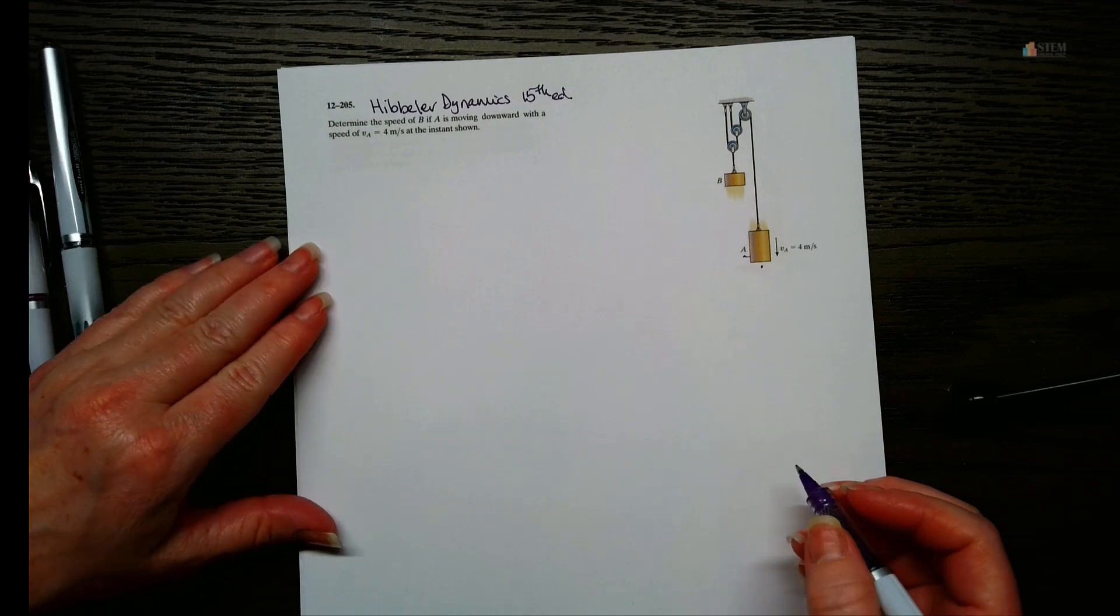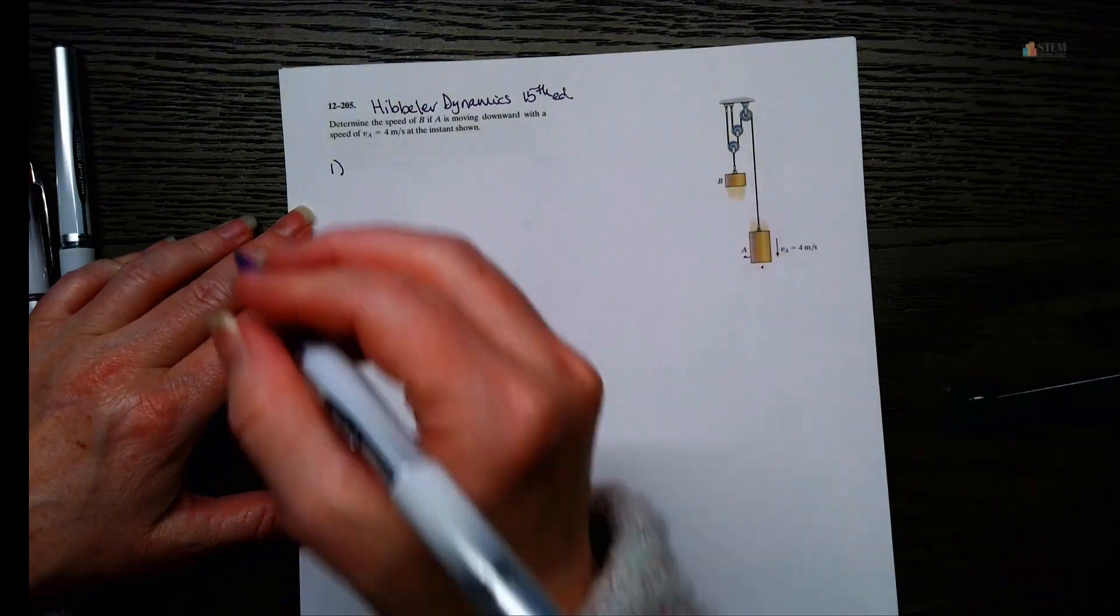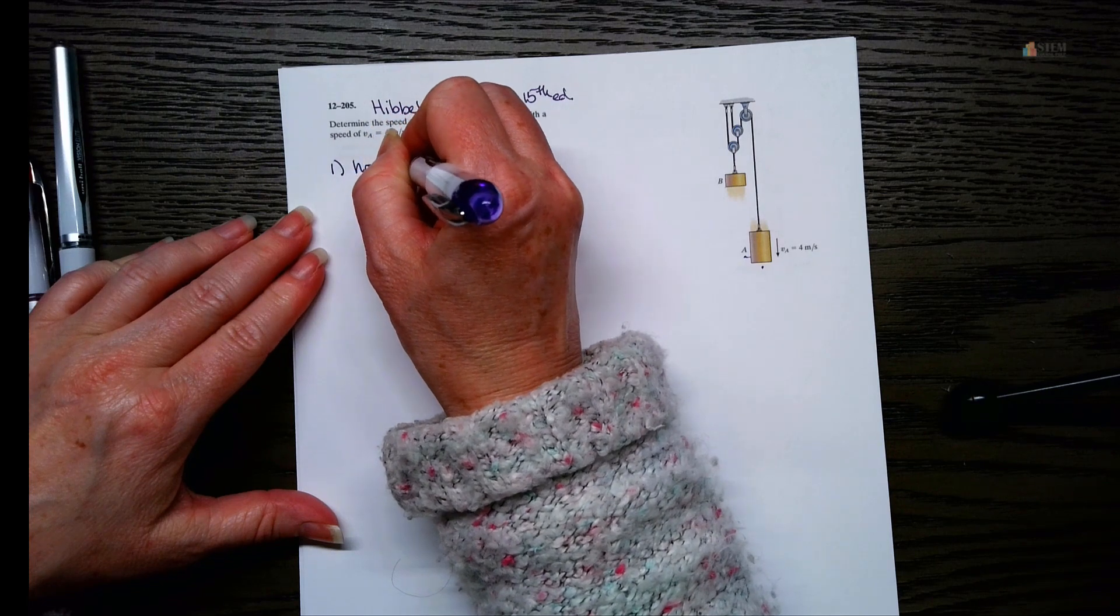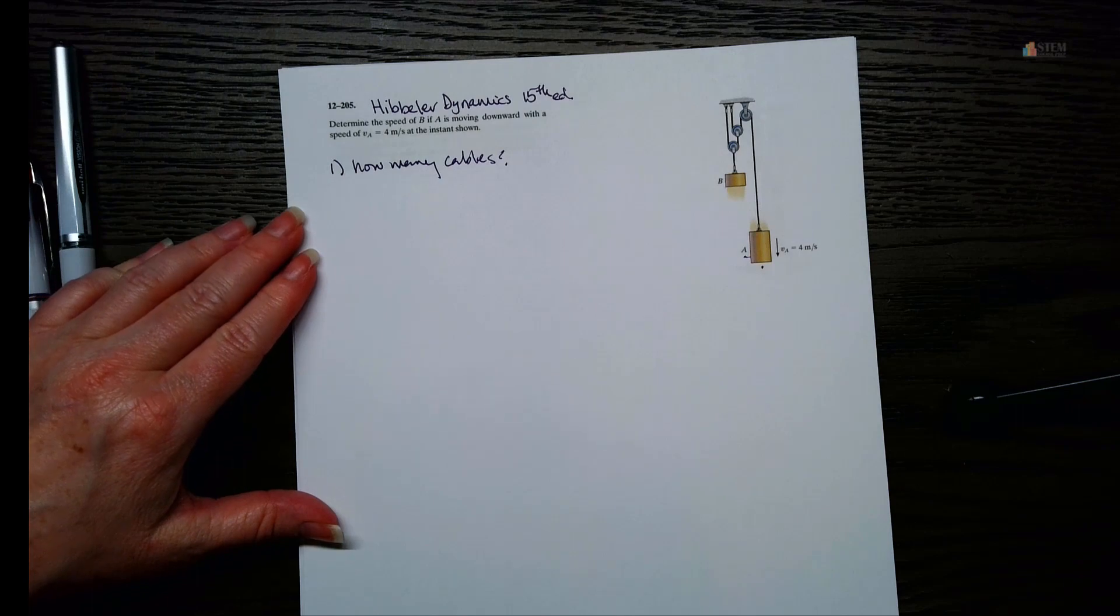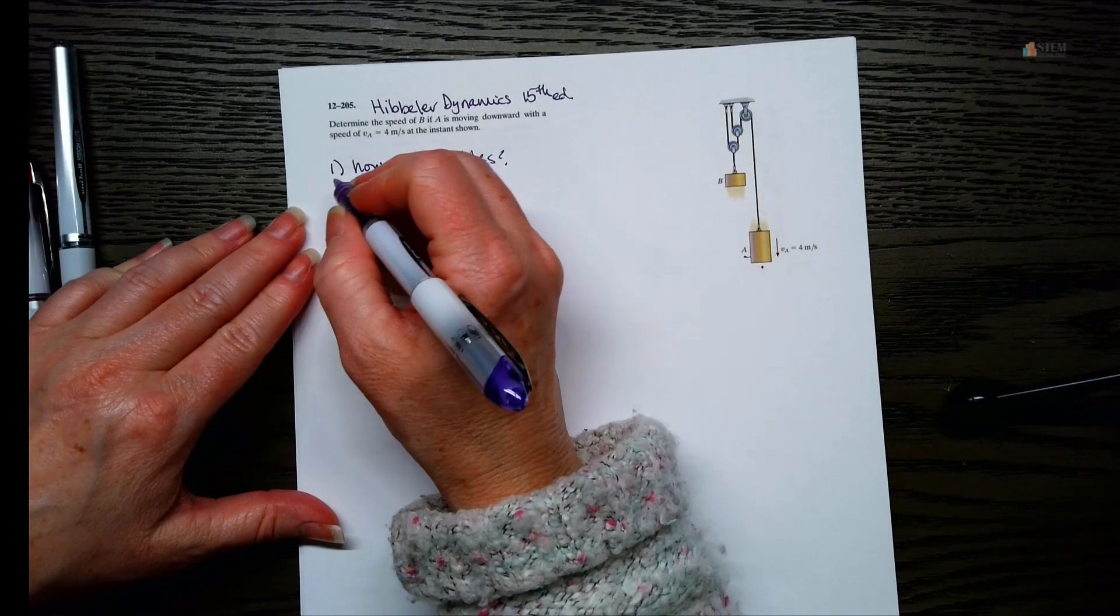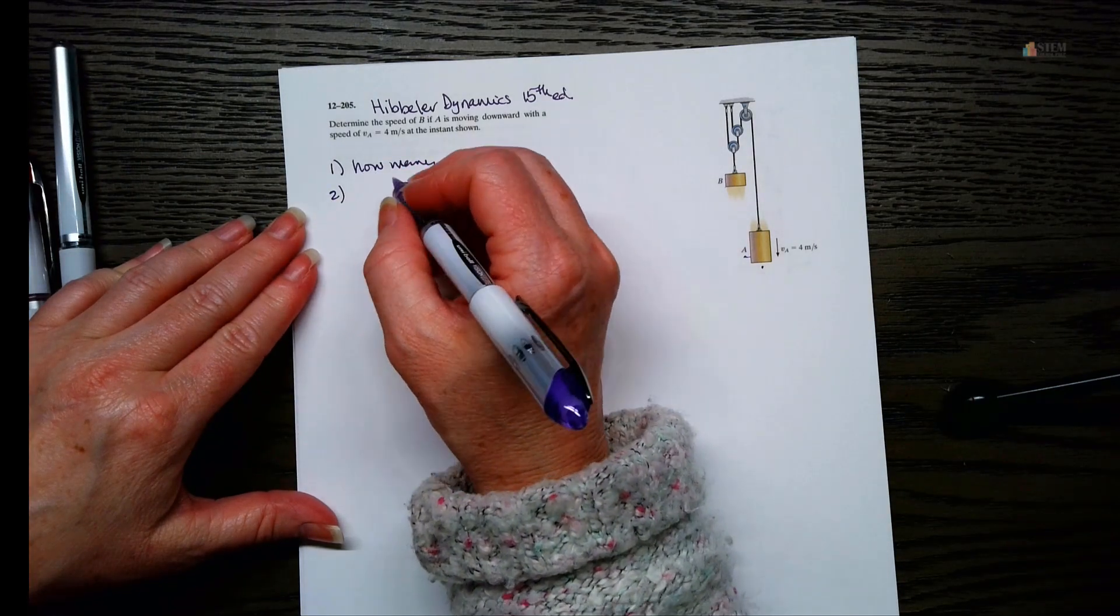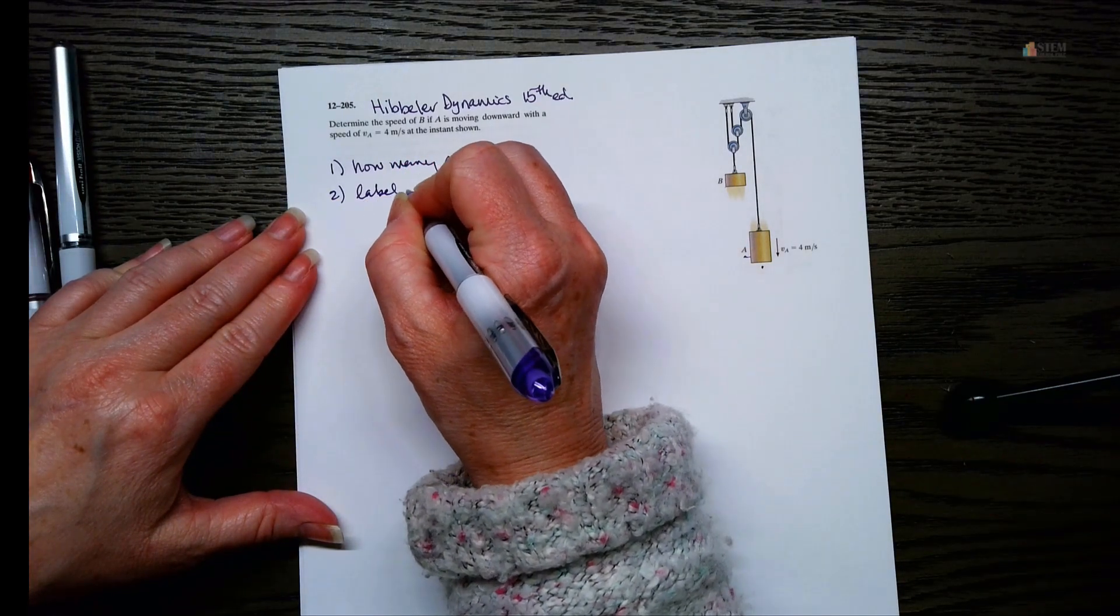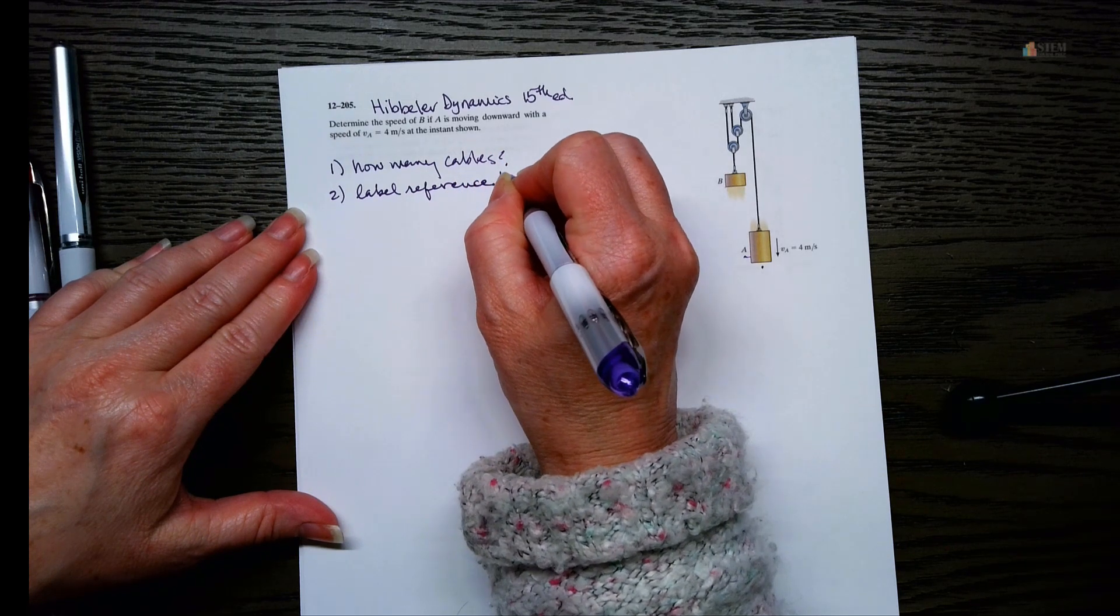Okay, so let's write down some steps that we're going to take. The first step we want to do is figure out how many cables we have. Alright, so that's the first thing we want to look at. And second, we need to label a reference line.